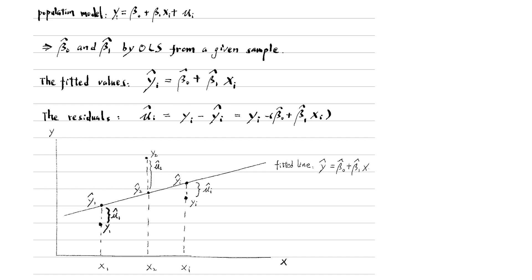The points of all the fitted values form a straight fitted line. It is the case if we assume a linear relationship between x and y. If we assume a quadratic relationship, the fitted line will be a curve.